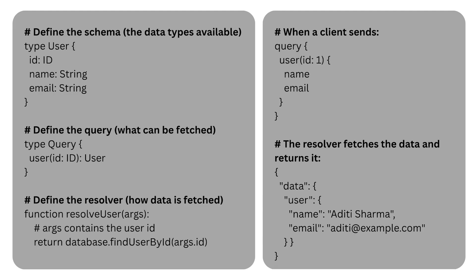Here's how a simple GraphQL setup might look in pseudocode. This shows the full flow: the query asks for something specific, the resolver fetches it, and the schema ensures that the structure of the data stays consistent.